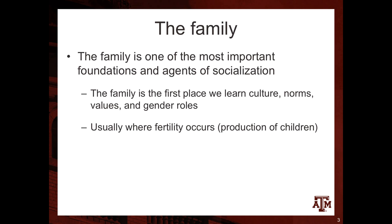The family is one of the most important foundations and agents of socialization because it is the first place that we learn culture, norms, values, and gender roles. Within families is where fertility happens — the production of children — so for demographers it's really important to understand family because the way societies organize into families will be an important topic in relation to fertility levels and patterns of a specific country. Family is also where we learn about health habits, and the education of parents influences not only fertility but also mortality and migration patterns.